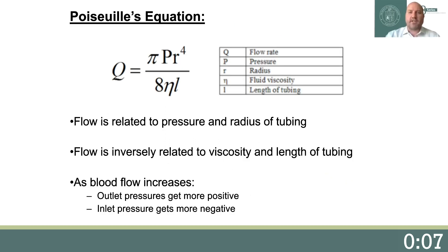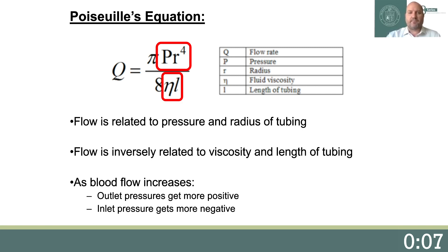When managing patients on ECMO, it is essential that the clinical team understand the relationship between pressure and flow in the ECMO circuit. The essential axioms are that flow is directly related to pressure and to the fourth power of the radius of the tubing. The bigger the ECMO circuit tubing or cannula, the higher the ECMO circuit is able to flow. Flow is inversely related to viscosity and the length of the tubing. Also, as flow increases, outlet pressures get more positive and inlet pressures get more negative.